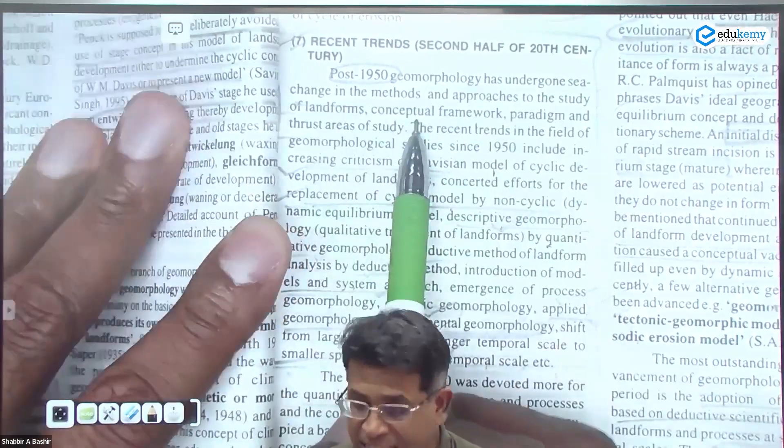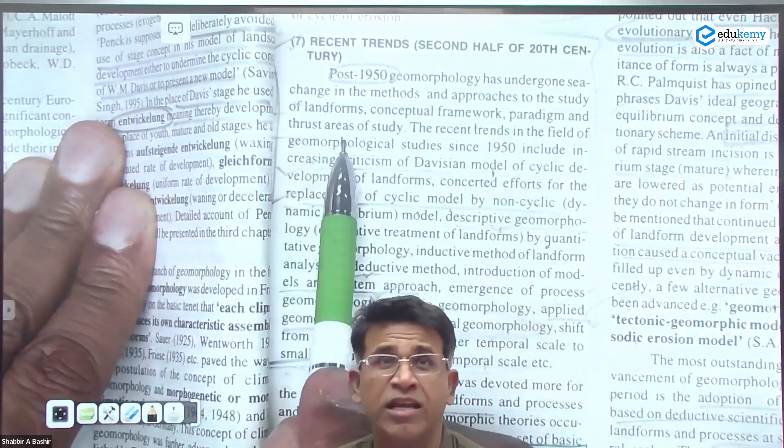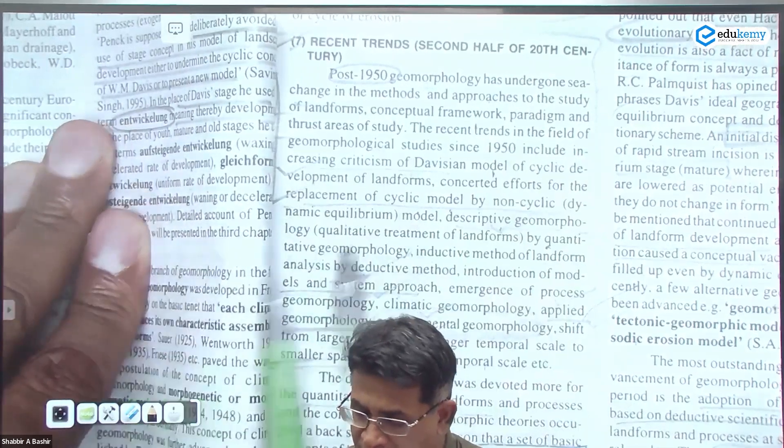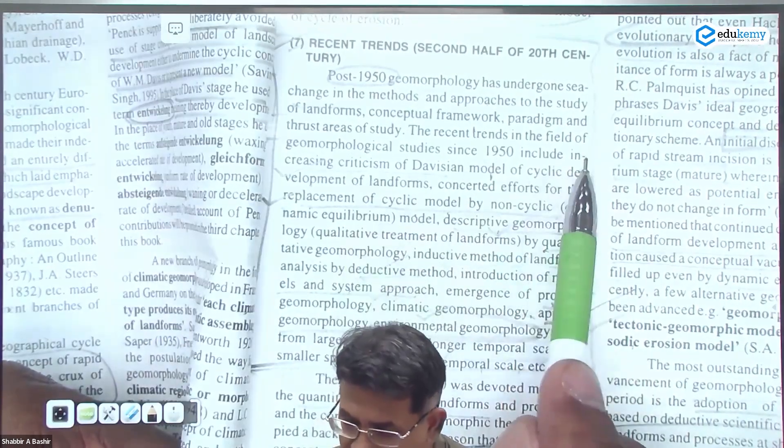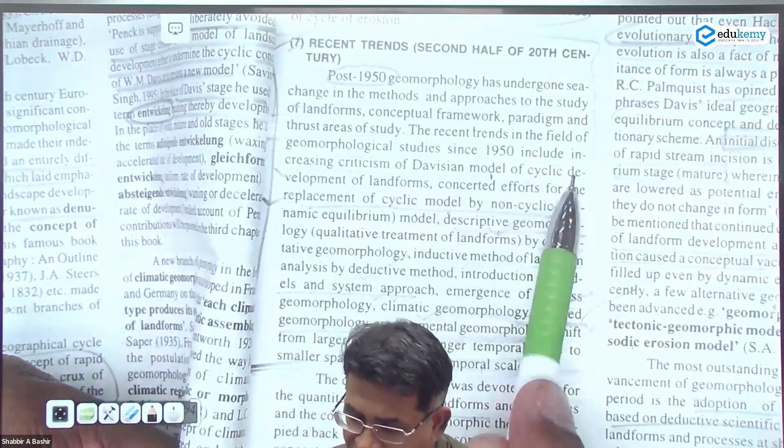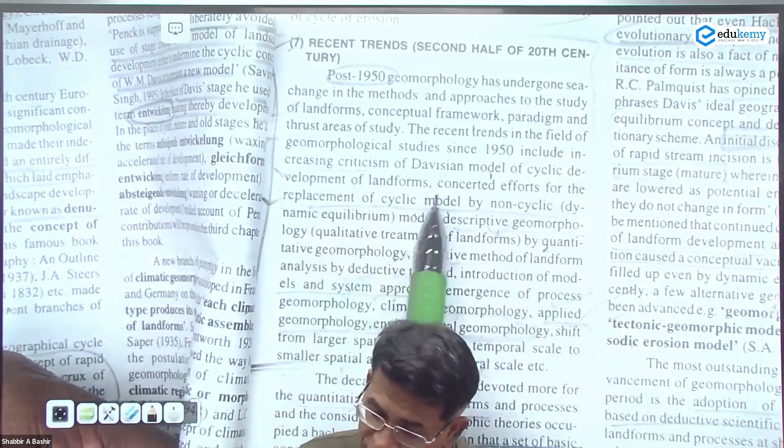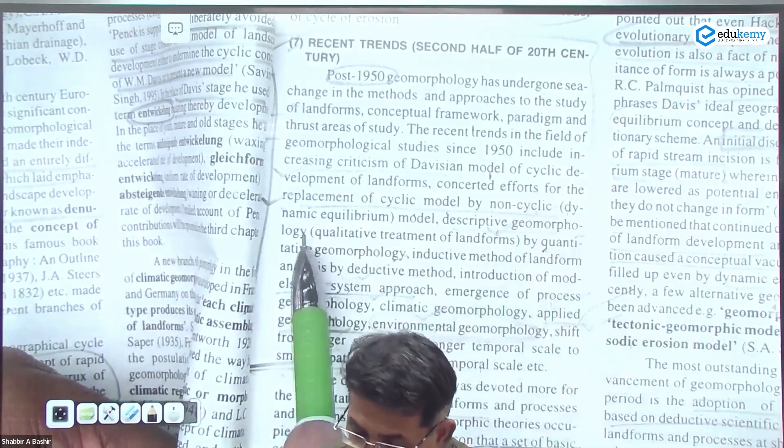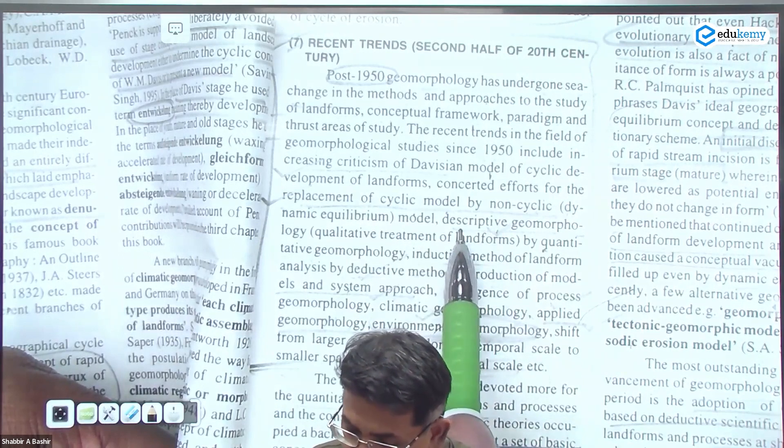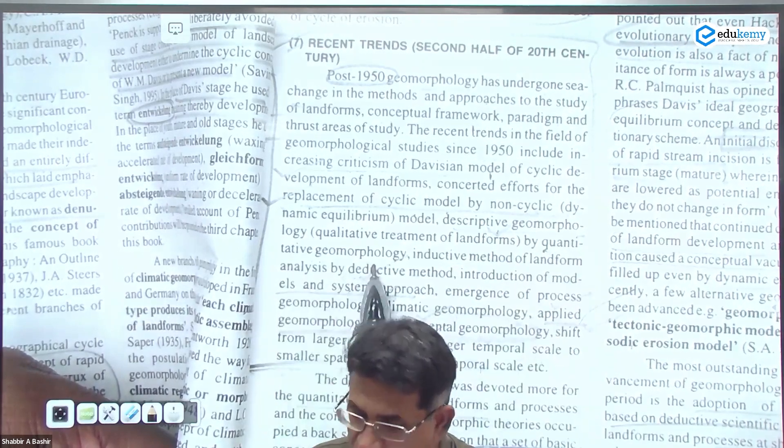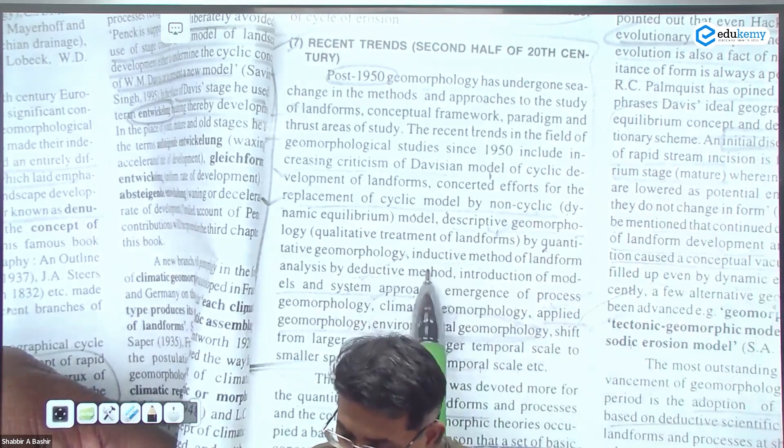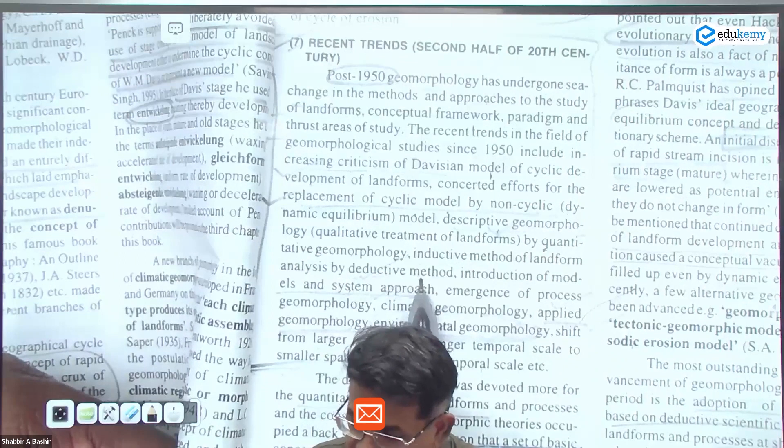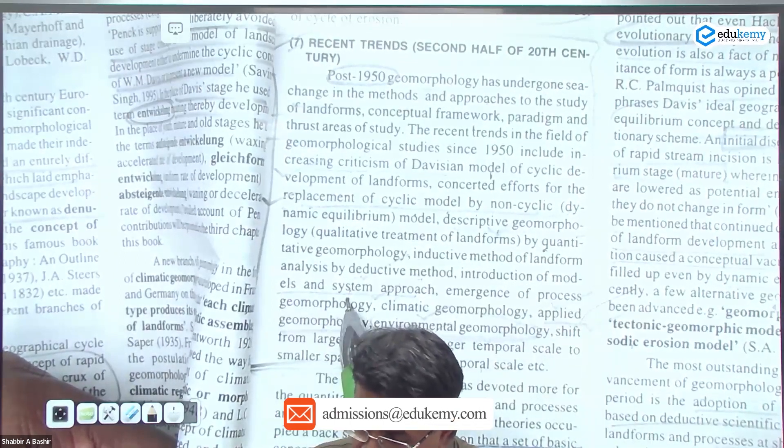If you look at the textbook here: Post-50s geomorphology has undergone a sea change in methods and approaches to study of landforms - the conceptual framework, the paradigm, and the thrust areas of study. The recent trends in fields of geomorphological studies since the 50s include increasingly criticism of Davis's model of cyclic development of landforms, the efforts for replacement of cyclic model by non-cyclic model.